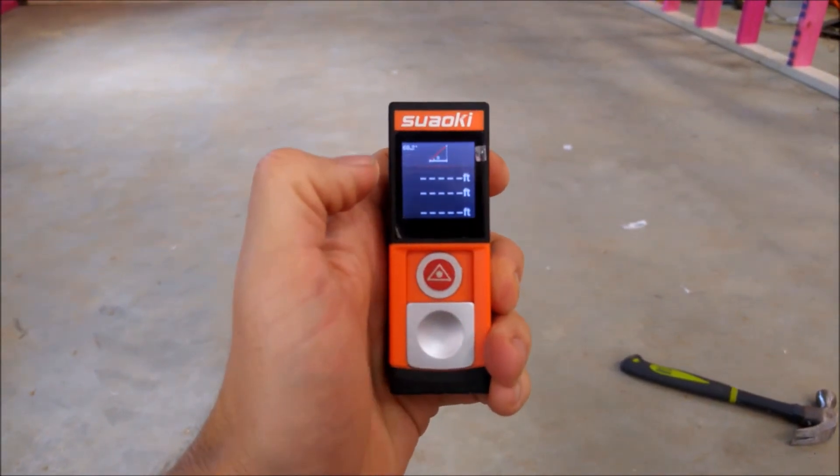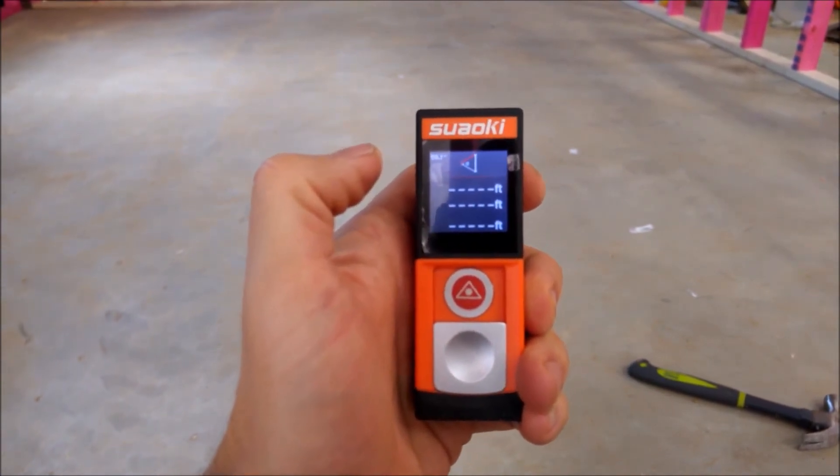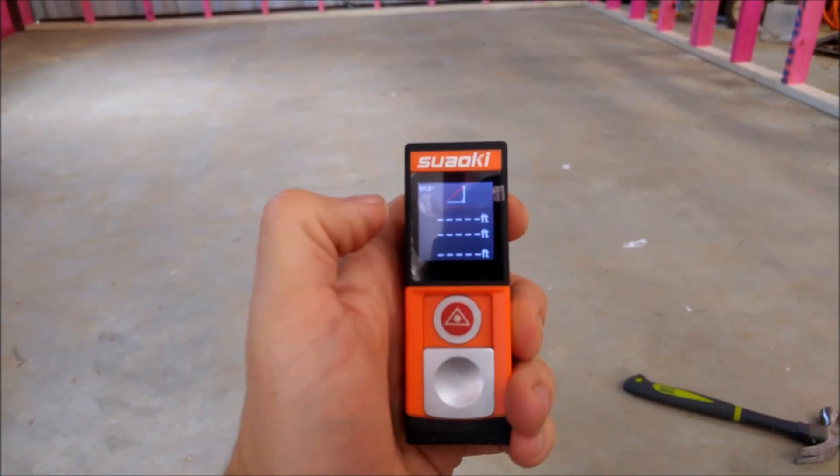So we've done area, we've done Pythagorean theorem, you can calculate the side of an equilateral triangle, and distance measurement.